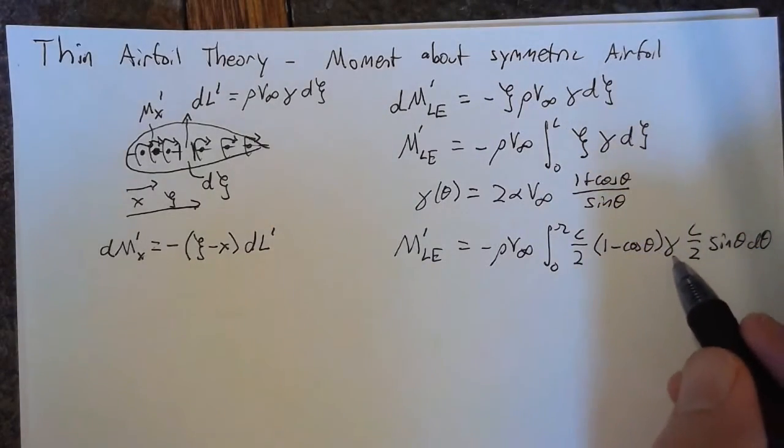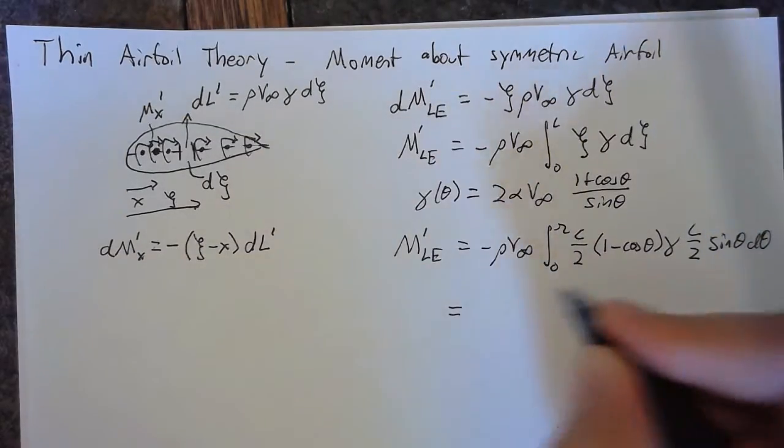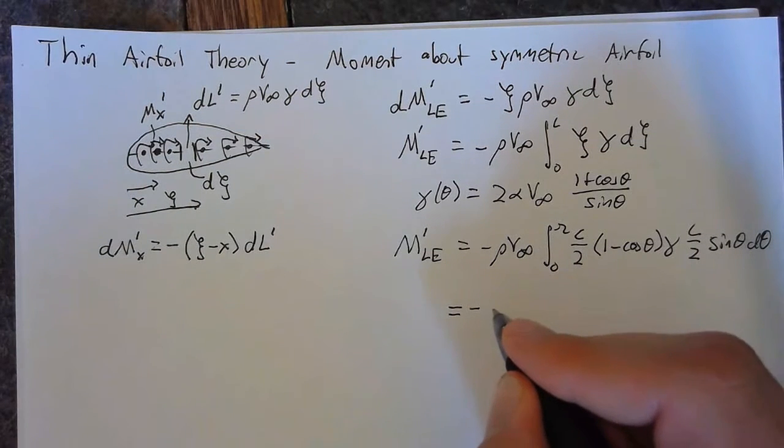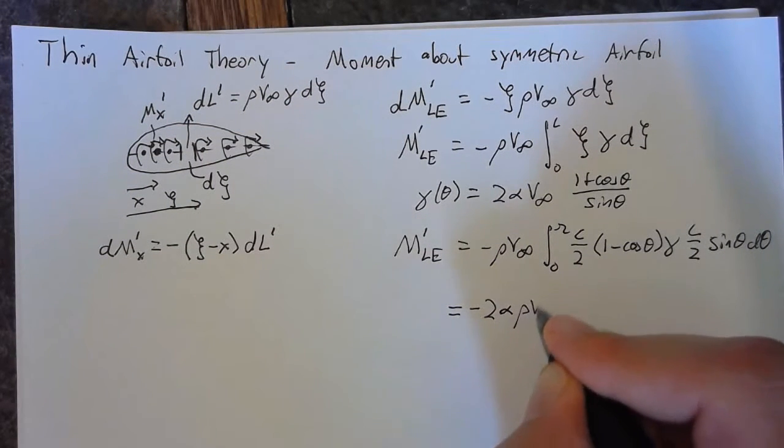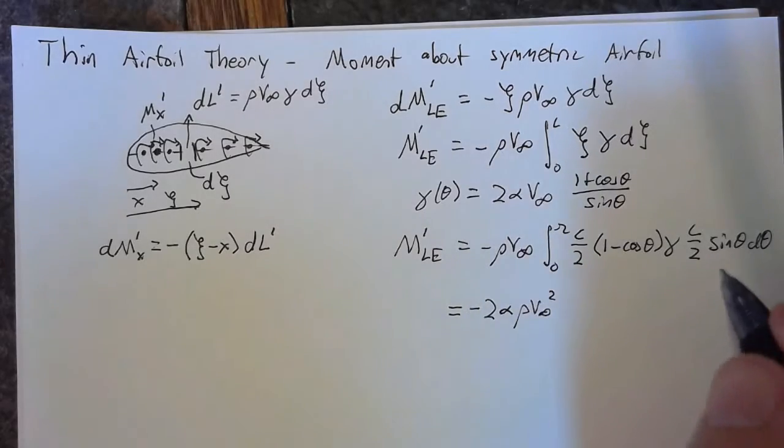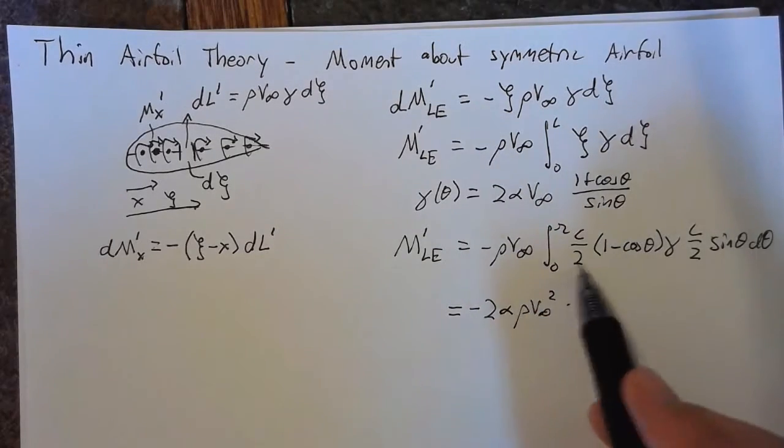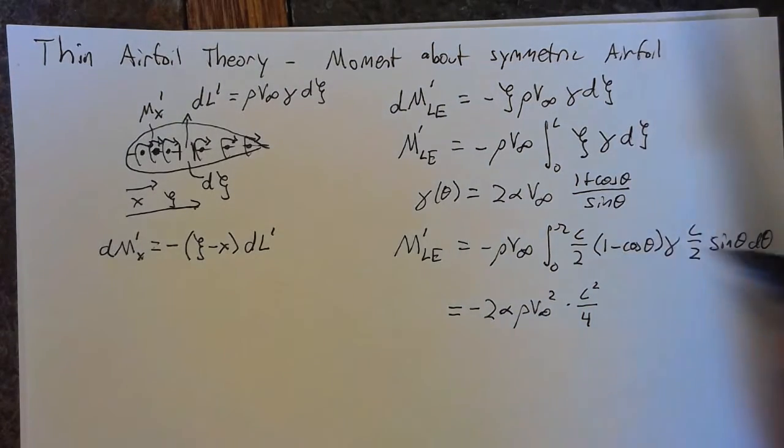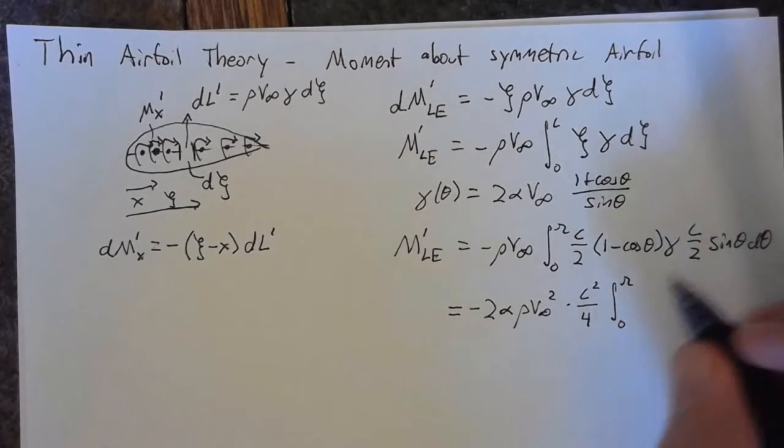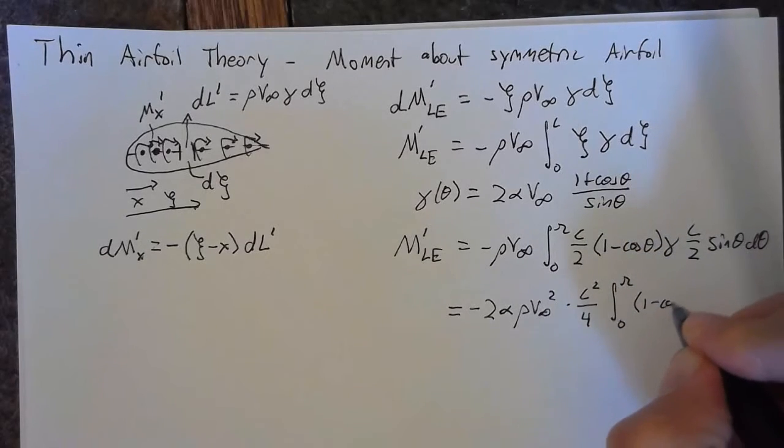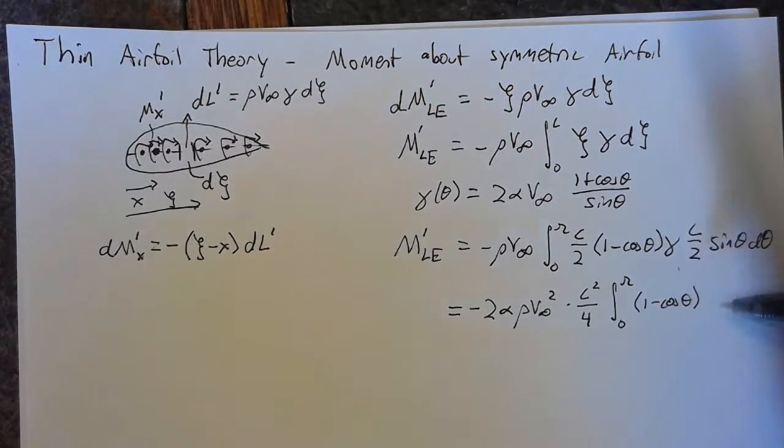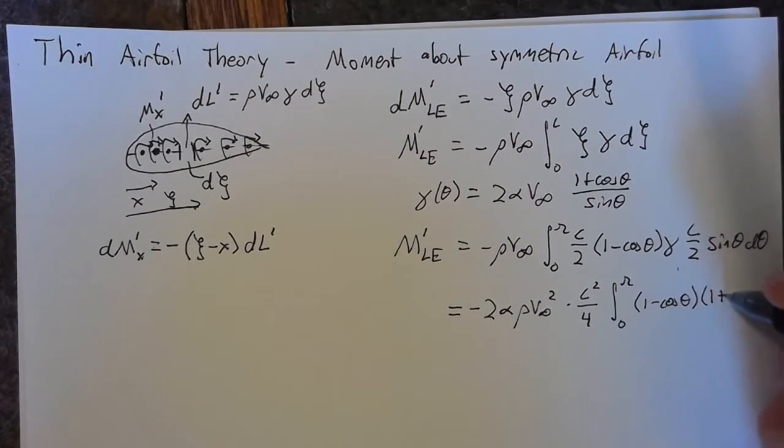Now we can plug our gamma in, which means this becomes, let's bring all this out. This becomes -2αρV∞². We can take both of these terms out to get c²/4, and now we'll integrate from 0 to π of (1 - cos θ), and then the sine terms once again will cancel. So this becomes (1 + cos θ) dθ.